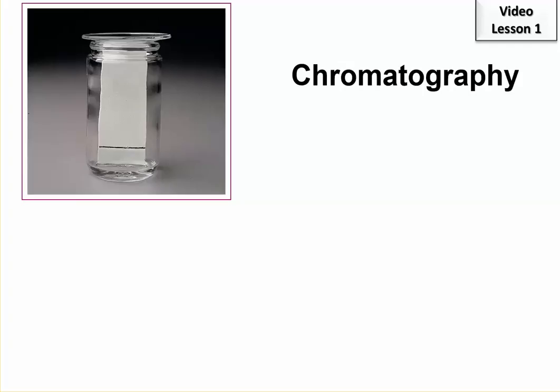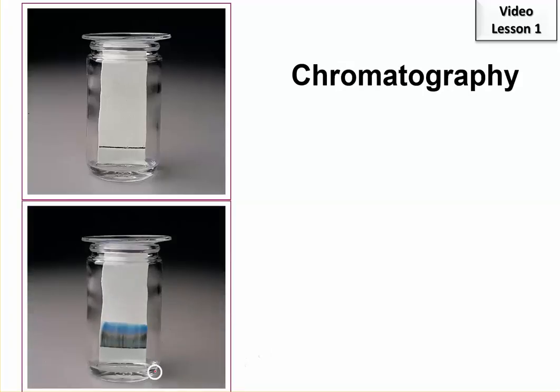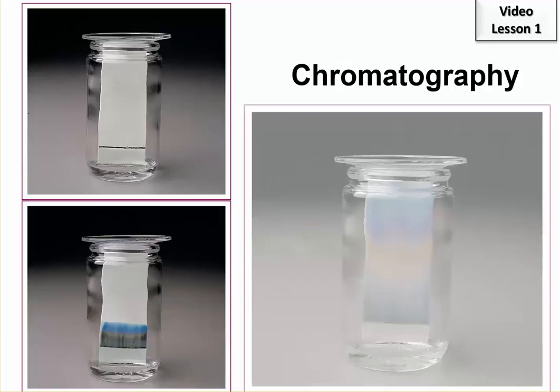As it crosses the ink line, it will take some of the compounds in the ink with it. So what ends up happening, let's look at the next one. The ink kind of gets smeared out, but notice how there's different colors here. What's happening is that according to their physical properties, some of the substances are more attracted to the liquid that's moving up, or the solvent, and so they tend to move up with it. Some of the substances are more attracted to the paper, and they stay down lower. And I would say each color that you see represents a different compound.